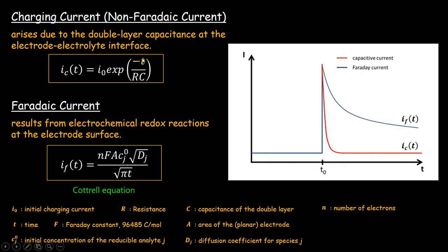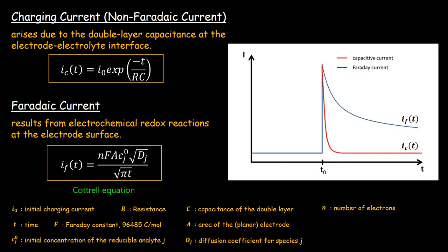The charging current can be given by this particular mathematical function — it is nothing but an exponential decay curve, decaying with respect to time. We also represent it in a curve showing I versus T, the time scale. As time increases, the capacitive current decreases. The current decreases faster and then becomes almost flat. Mathematically, it will only reach zero when T equals infinity.